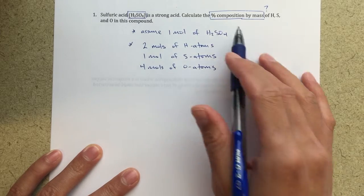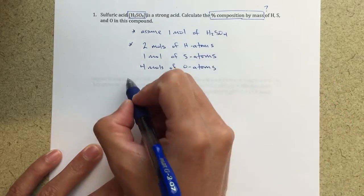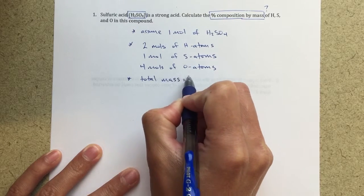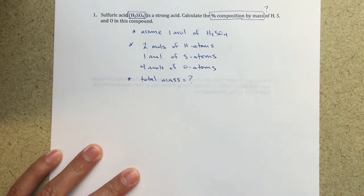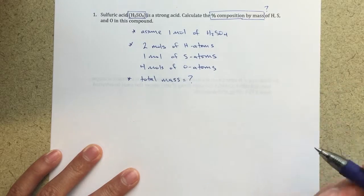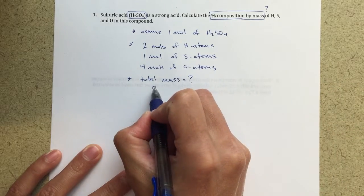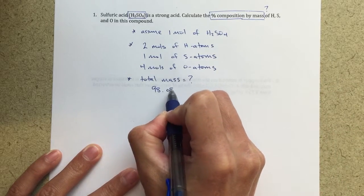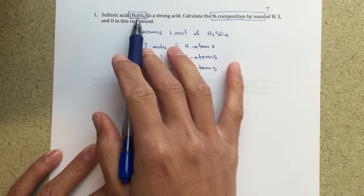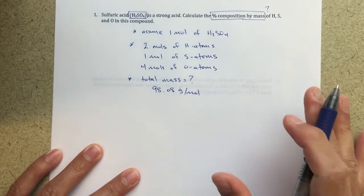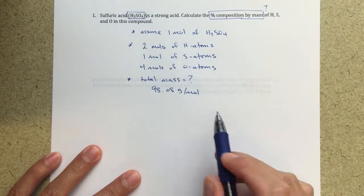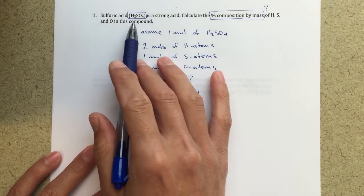The next step then is, in terms of percent composition by mass, we might ask ourselves, what's the total mass? And to find the total mass, I'm basically just going to add up all of the different mass contributions of hydrogen, sulfur, and oxygen. And I can calculate that to be 98.08 grams per mole, and that's the molecular mass of H2SO4. And if you're not exactly sure how to calculate that, let me know and I'll help you with that. But that's going to be the total mass of my H2SO4.